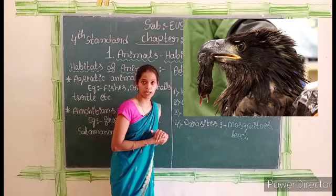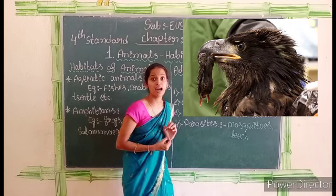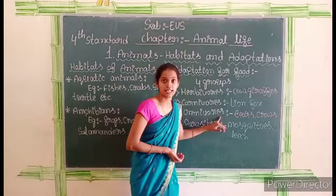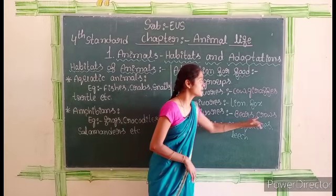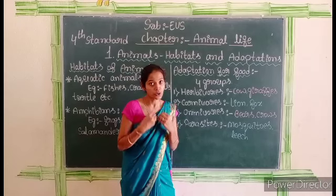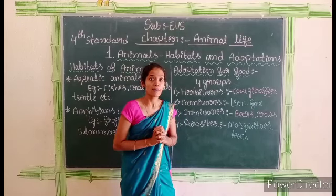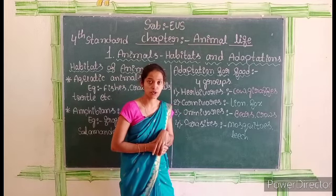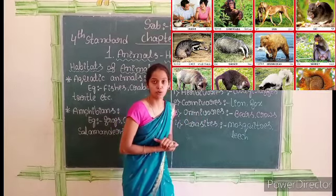Omnivores are animals which eat both plants and animals. Examples of omnivores are bears, crows, cockroach, and also humans. Man eats both plants and flesh, so man also belongs to the omnivores group.